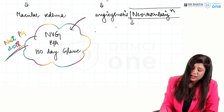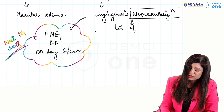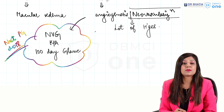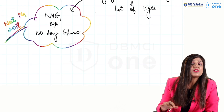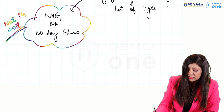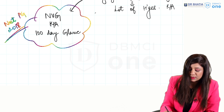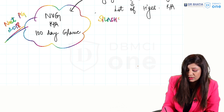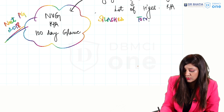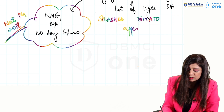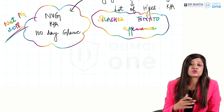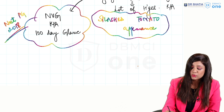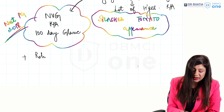Whenever there is a lot of neovascularization, these vessels are very quick to bleed, so you will have a lot of hemorrhages. The total fundus is filled with hemorrhages - this is called the 'splashed tomato appearance,' which is very specific to CRVO. In contrast, in arterial occlusion you were getting pale retina with a cherry red spot; here you get the splashed tomato appearance.